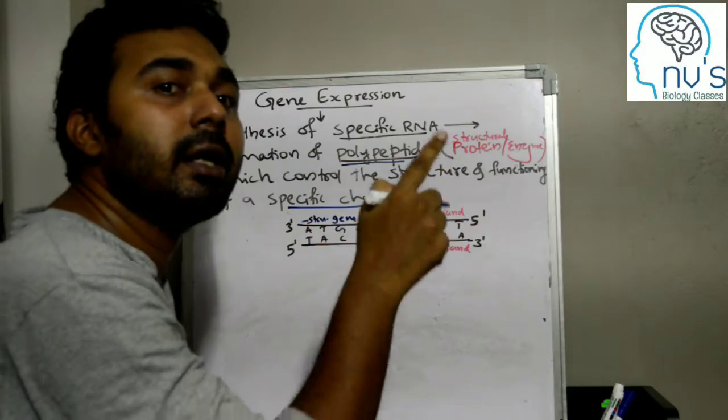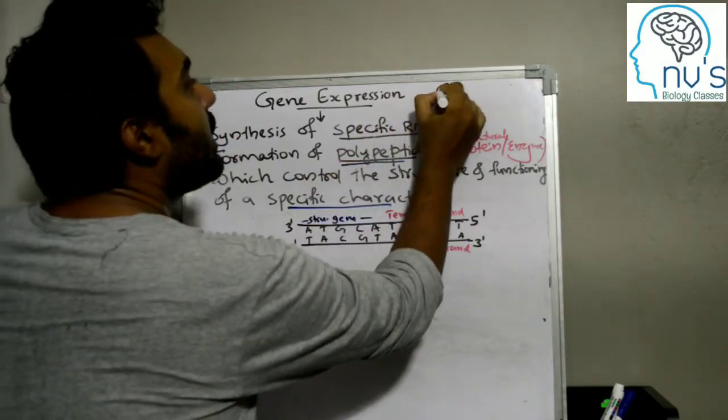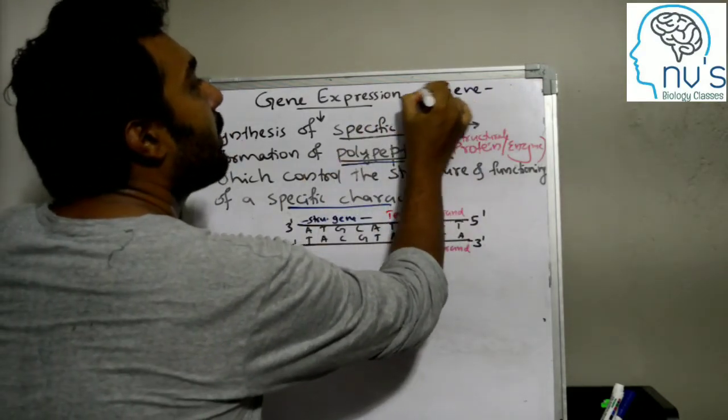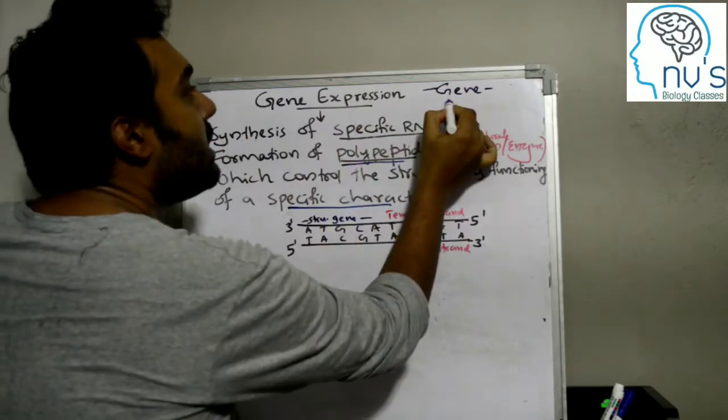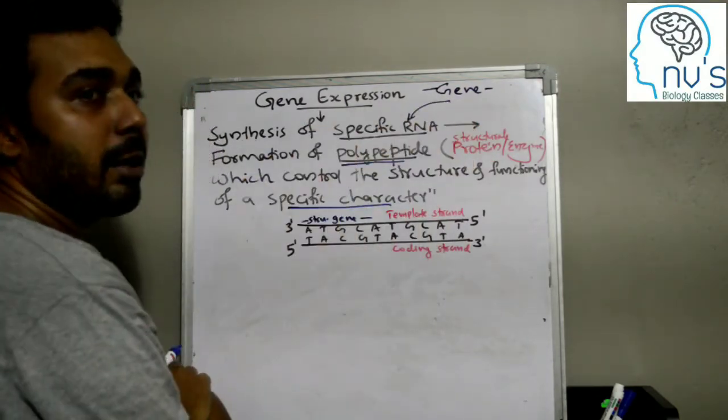DNA is the strand. DNA is a small piece of gene.